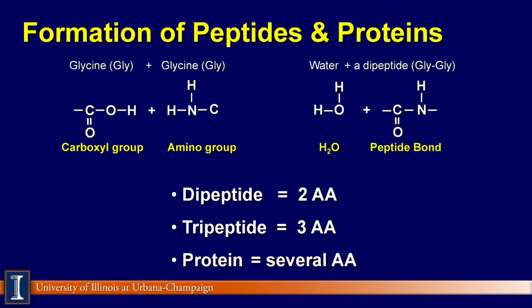Proteins in soybean meal, alfalfa, corn, milk, and muscle are large proteins and contain a large number of amino acids. Each of these feeds contains a different amount of protein and a different amount of individual amino acids, and the order in which the amino acids are hooked together is also different.